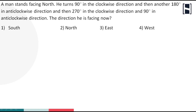Hi everyone, welcome to Instax. In this video we'll be discussing one of the important models in direction. The given question: a man stands facing north. He turns 90 degrees in the clockwise direction, then another 180 degrees in anti-clockwise direction, then 270 degrees in the clockwise direction, and 90 degrees in the anti-clockwise direction. What direction is he facing now?